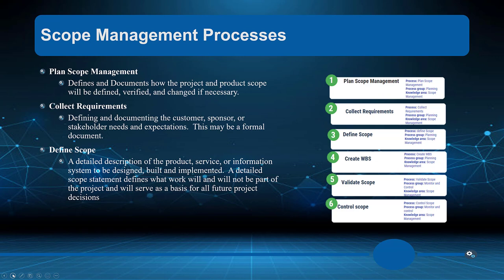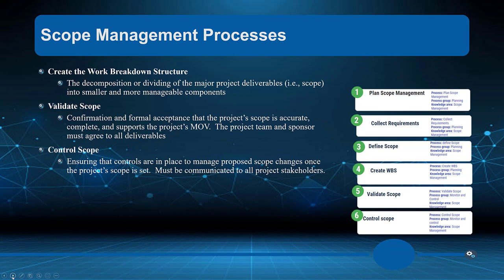We have to define the scope in great detail. A detailed scope statement describes the product, service, or information system to be designed, built, and implemented. It defines the work that will and will not be part of the project. We also need to include things that are not part of the project — for example, data extraction from older systems. The scope management cycle covers collecting requirements, defining the scope, creating the WBS, validating the scope, and controlling it to prevent scope creep.